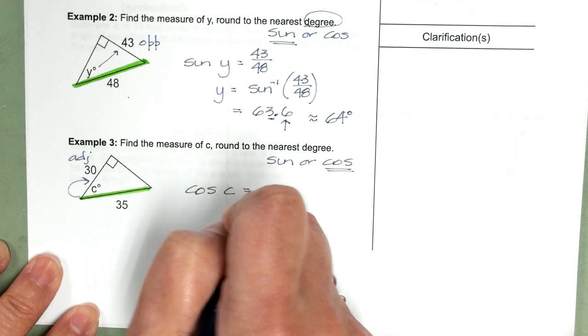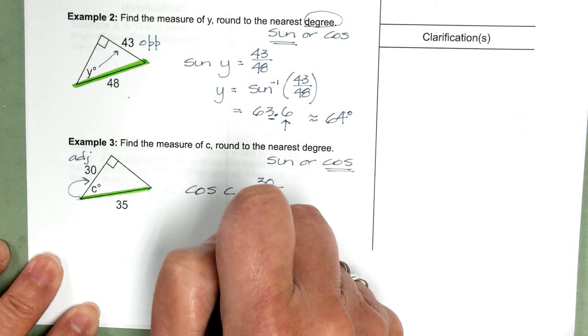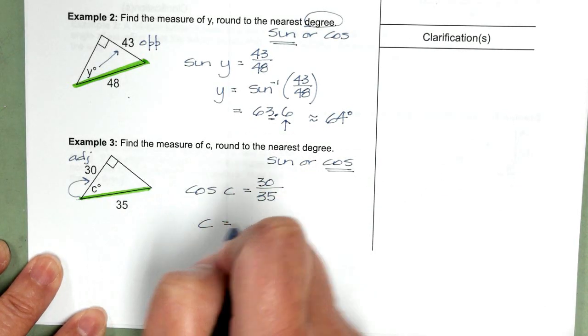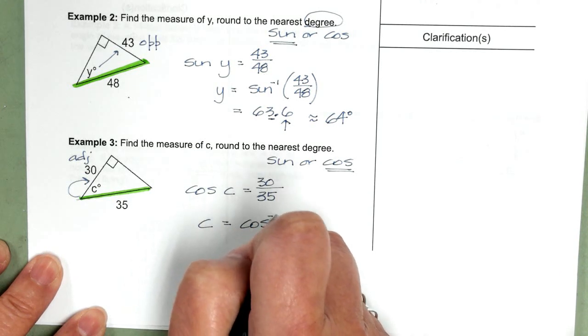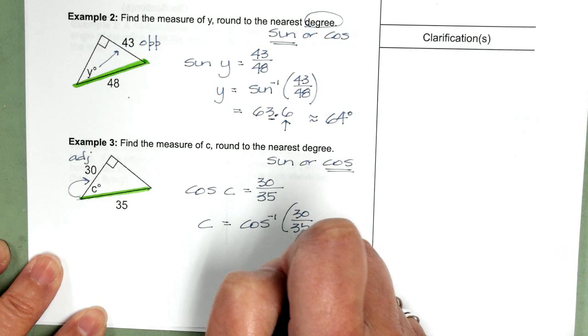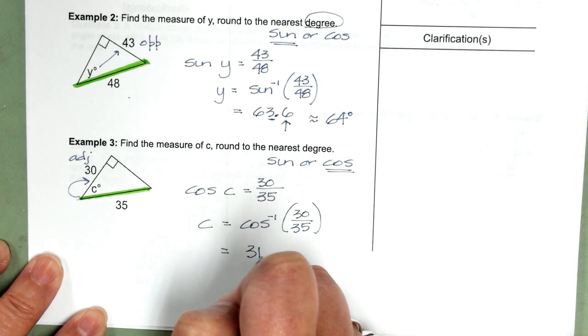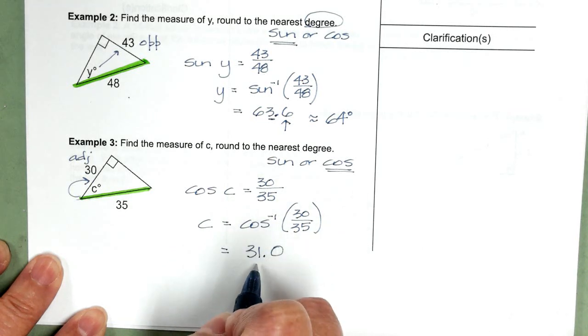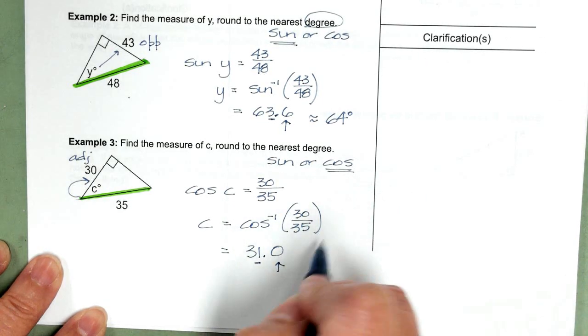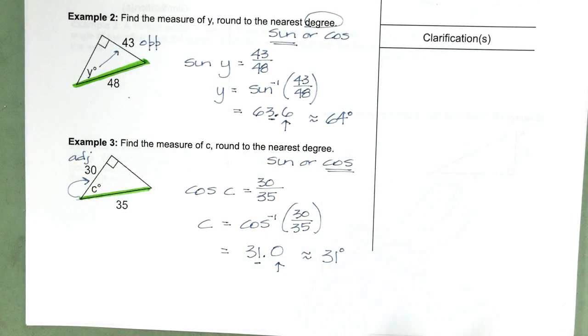Cosine of C equals the adjacent over the hypotenuse. We're going to take the inverse cosine of 30 divided by 35. That's going to give us 31.0. Again, we want to round to the nearest degree. The next digit is 0. So C is 31 degrees.